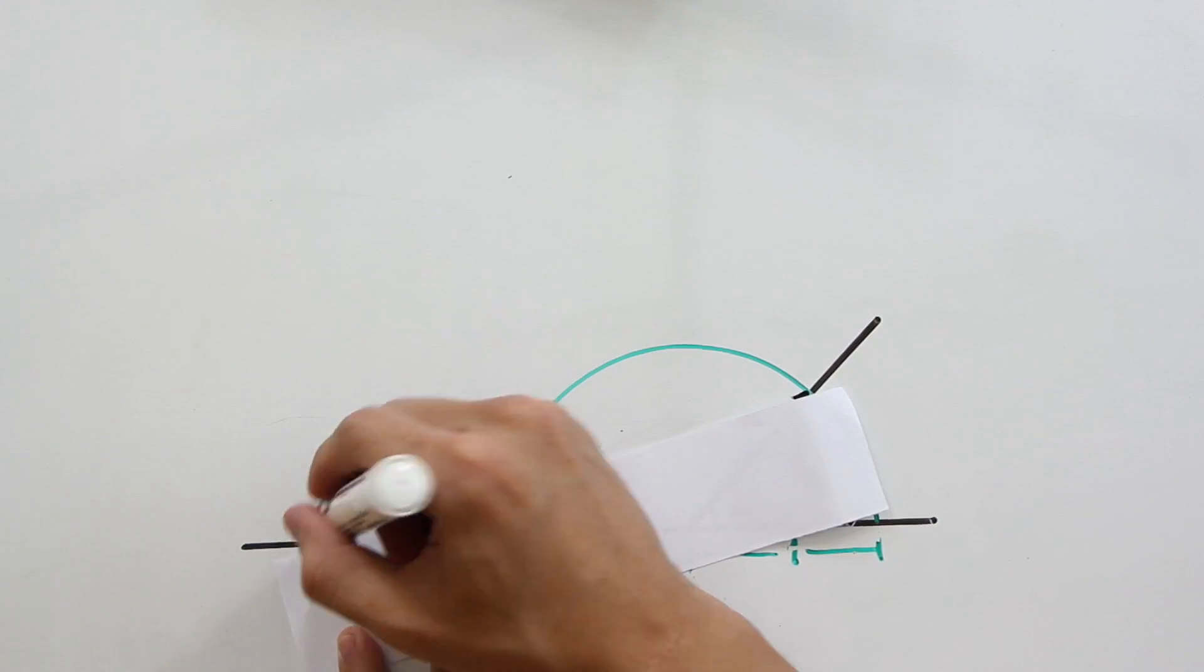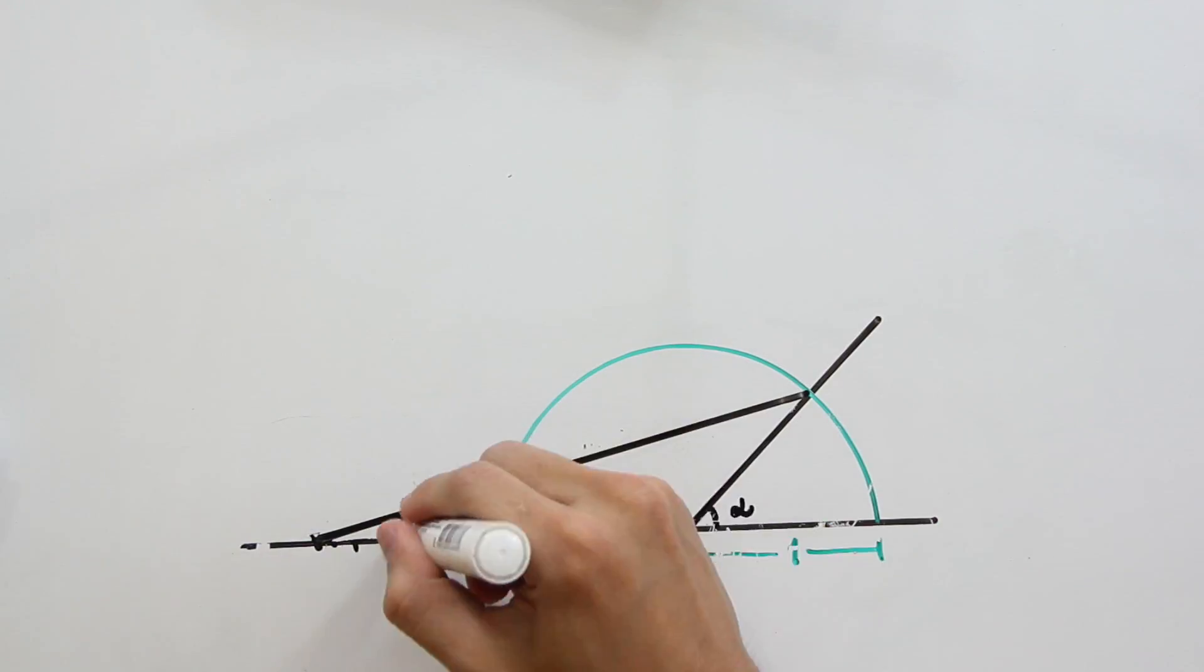As you can see, we transformed these infinite steps into one step. Basically, when we do this fold, called the Beloch Fold,